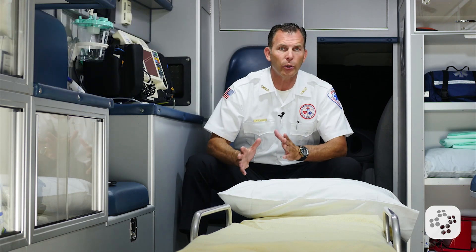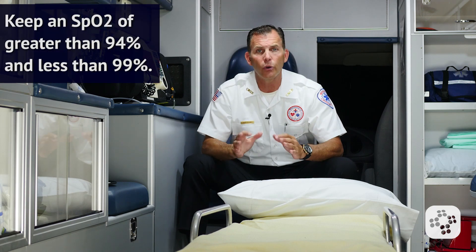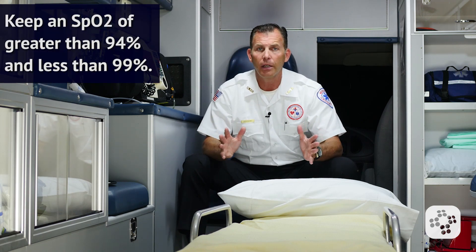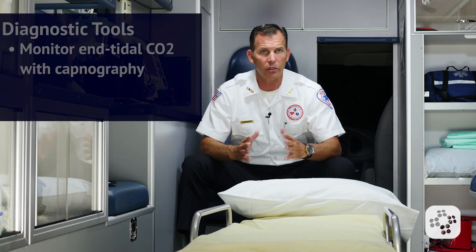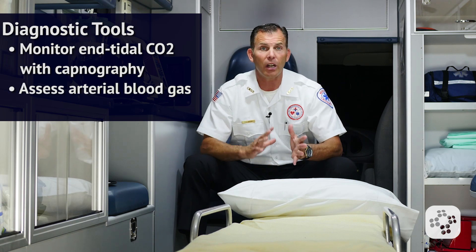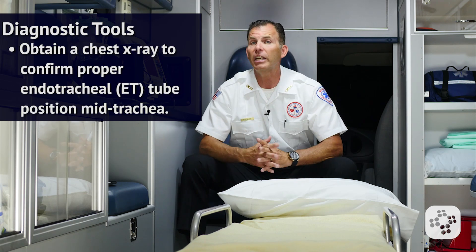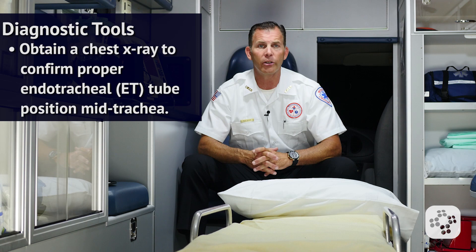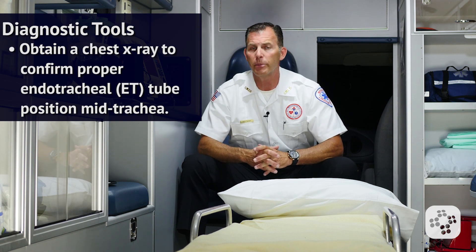Because respiratory complications and hemodynamic instability are the primary early causes of mortality after ROSC, it's vital to provide optimum oxygenation and ventilation. The goal is to keep an SpO2 of greater than 94%. Diagnostic tools need to be used to optimize care, such as monitoring end-tidal CO2 with capnography, assessing arterial blood gas, and obtaining a chest x-ray to confirm proper endotracheal tube position in the mid-trachea.